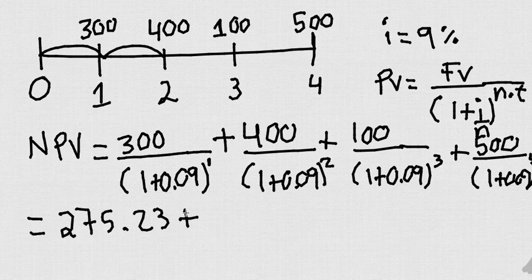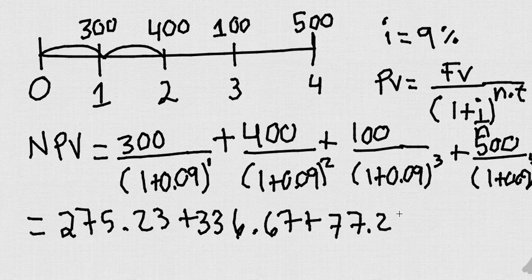And again, I'm doing it with you. The second one, you should have got 336.67, then we're going to do 100 divided by one plus 0.09 to the three, and you're going to get 77.22.